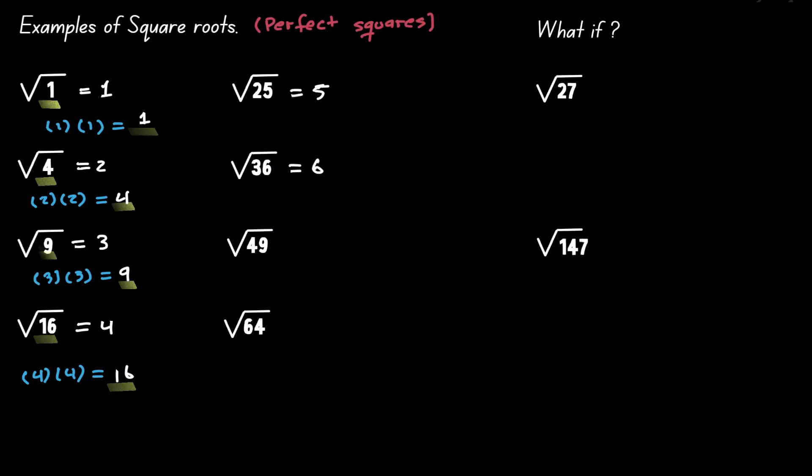The square root of 49 is 7, because 7 multiplied by itself gives you 49. And the square root of 64 is 8, because 8 times 8 gives you 64.